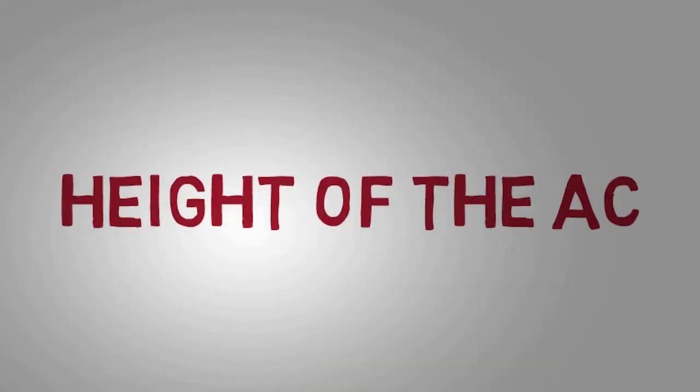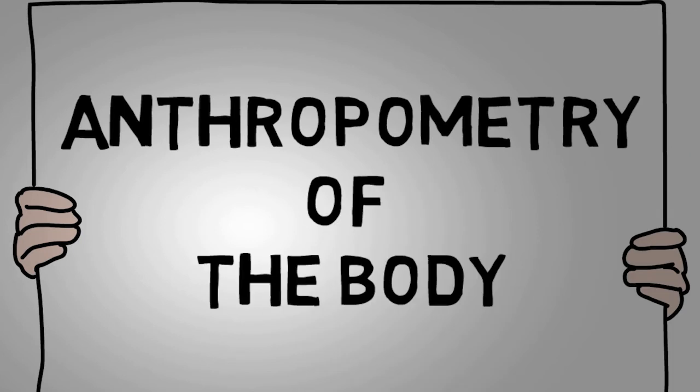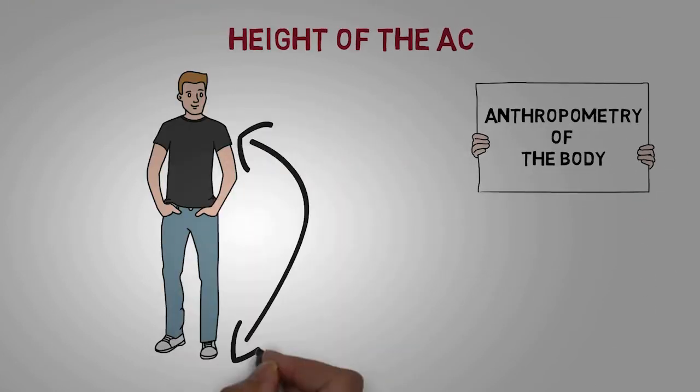Height of the AC: According to anthropometry, we experience the air which is at height 3 feet to 5 feet from the ground. Therefore, we place the AC to achieve the cooling at this height.